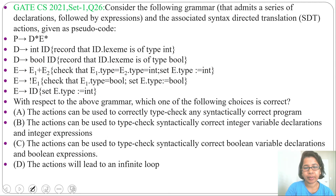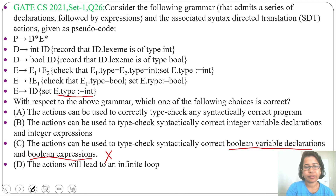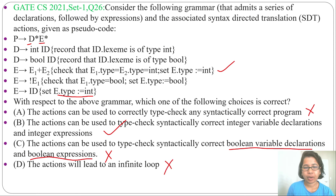Option C: the action can be used to type-check syntactically correct boolean variable declarations and boolean expressions. This is wrong, as here we are generating integer variable declarations and doing integer arithmetic operations only, so option C is wrong. Option D: the action will lead to an infinite loop. No, this will not lead to an infinite loop — it is simply declarations followed by expressions, nothing that would create an infinite loop. So option D is false. We found option A is wrong, option C is wrong, option D is wrong. Only option B is correct.